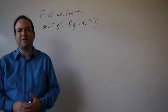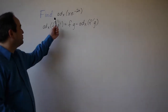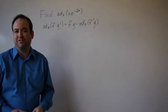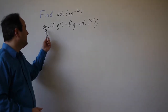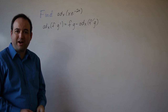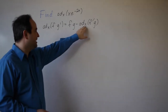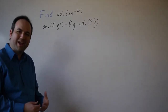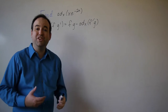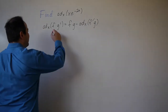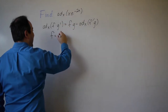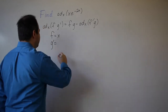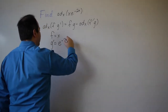Let's try integration by parts on an example. Here we're trying to find the anti-derivative with respect to x of x times e to the negative 2x. The formula is that the anti-derivative of f times g prime is f times g minus the anti-derivative of f prime g. When dealing with an integrand of the form x times something we know how to anti-differentiate, we set f equal to x, and g prime is whatever is left over — in this case, e to the negative 2x.